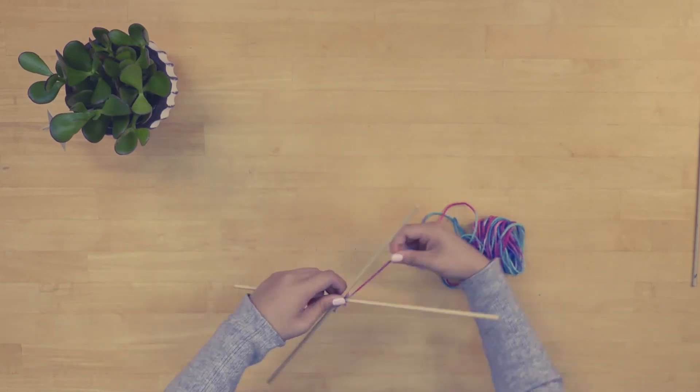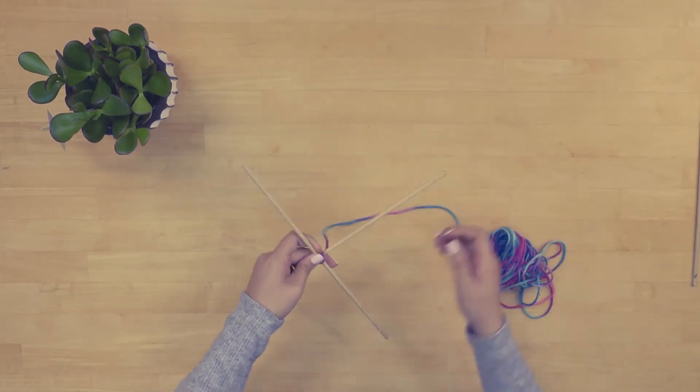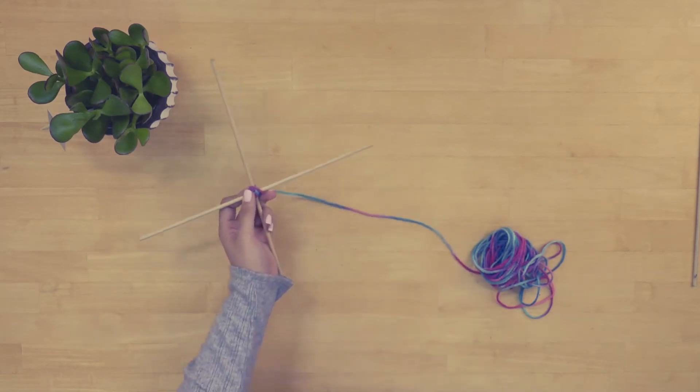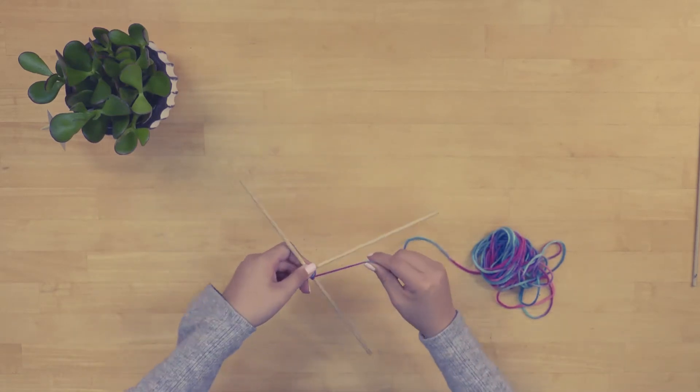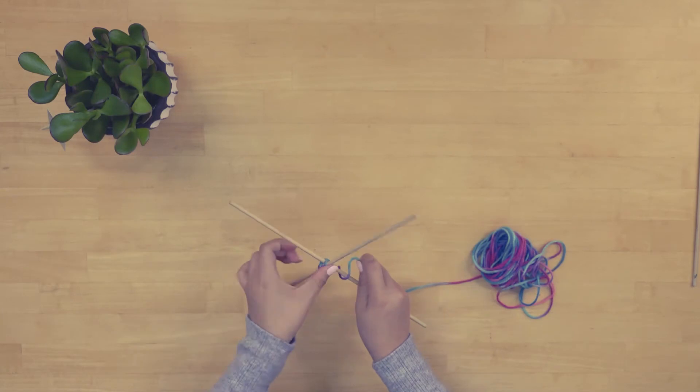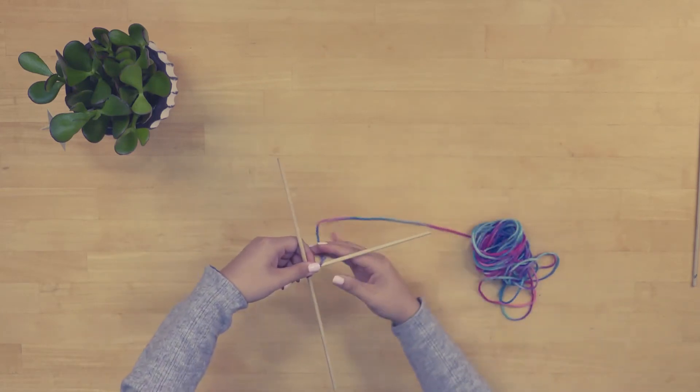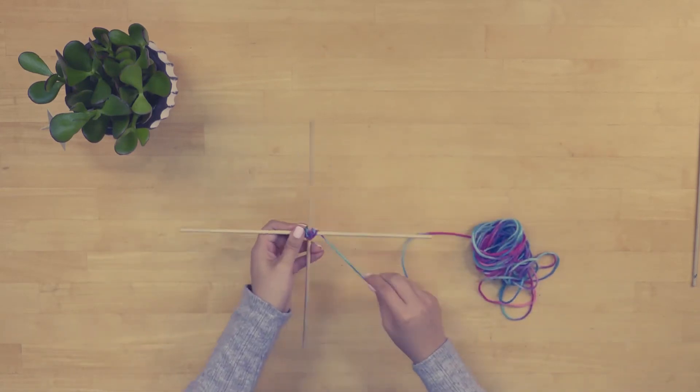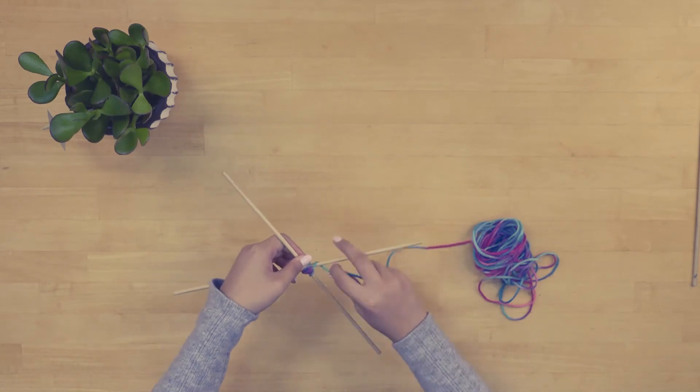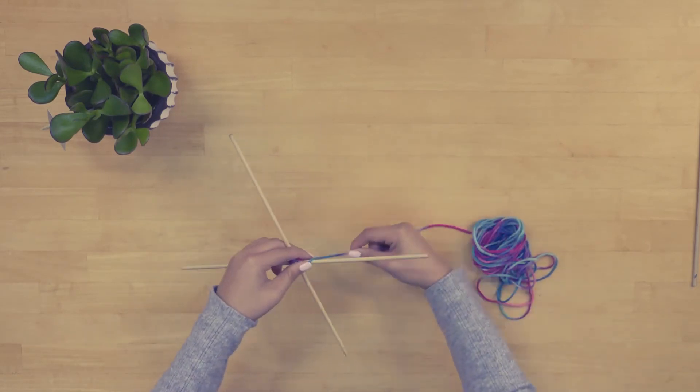Then, once you feel they are steady, you will begin to wrap your yarn around the dowel once. Then make your yarn way to the next dowel and wrap. Then next and wrap. And just keep going.